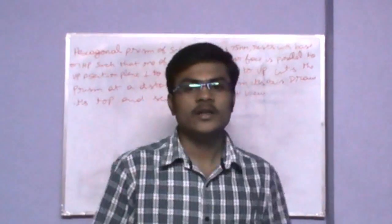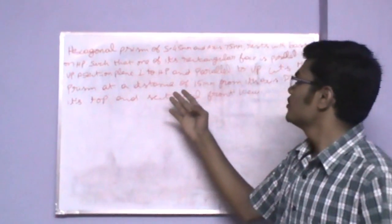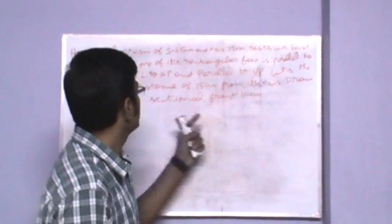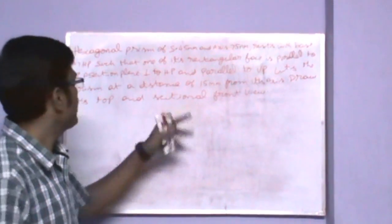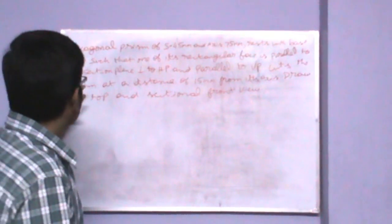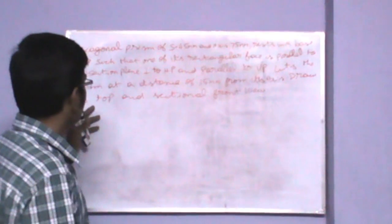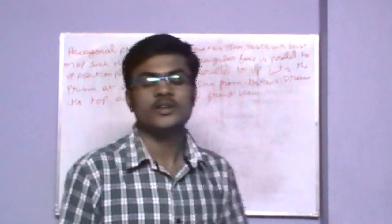Let us look at an example in the section of solids, which is part of our engineering graphics. A hexagonal prism of side 45mm and axis 75mm rests with one of its bases on HP such that one of its rectangular faces is parallel to VP. A section plane perpendicular to HP and parallel to VP cuts the prism at a distance of 15mm from its axis. Draw its top and sectional front view.